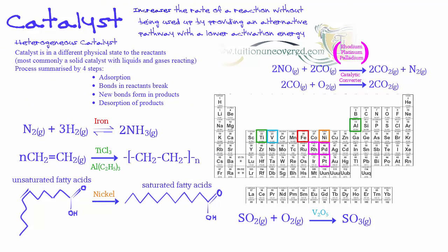Let's look at some specific examples of heterogeneous catalysts in industry, specifically mentioned on the syllabus. First, iron — one of the transition metals — is used in the Haber process for the production of ammonia. Nitrogen and hydrogen gases are used to produce mass amounts of ammonia, which can then be used for fertilisers, allowing enrichment of the ground and growth of plants and crops, maximising yield and providing food and material for farmers.